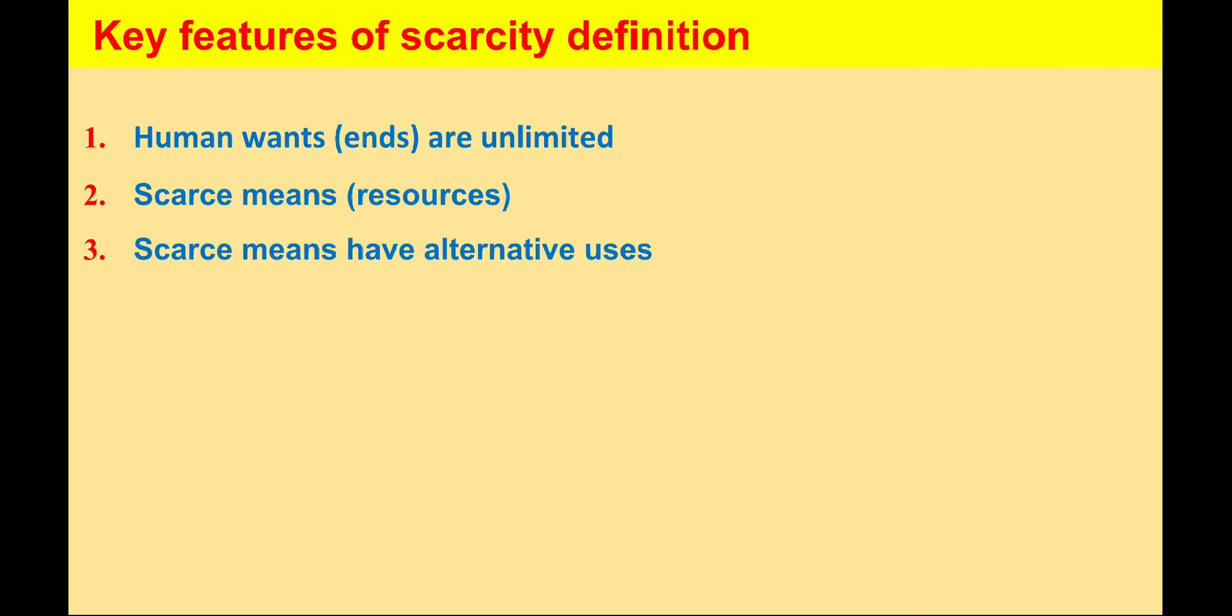With regards to alternative uses of means, we can say that the scarce resources have alternative uses; that means the resources can be put into several or multiple purposes. In this connection, let me give the example of land. Land is a resource which can be used for several purposes like growing crops, construction of buildings, or making bricks. These are different ways of utilization of resources like land. If the land is used for growing of crops only, then the same piece of land cannot be put to other uses simultaneously.